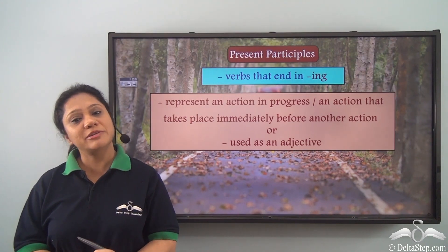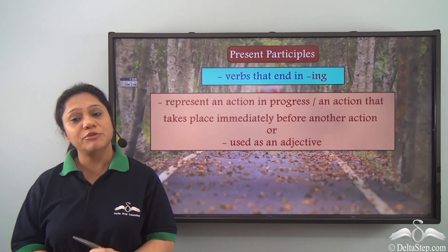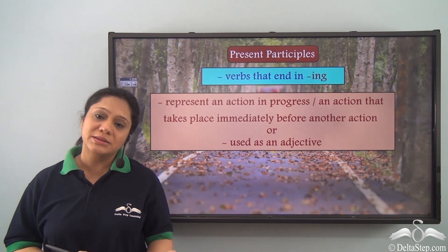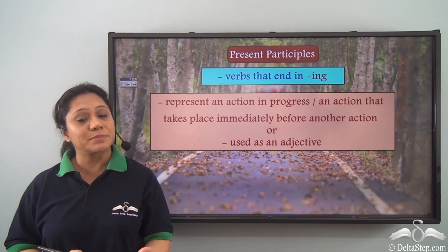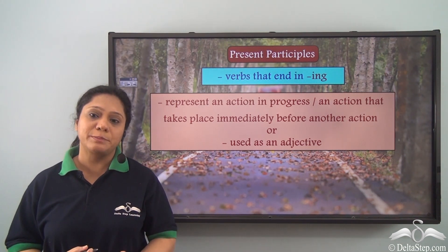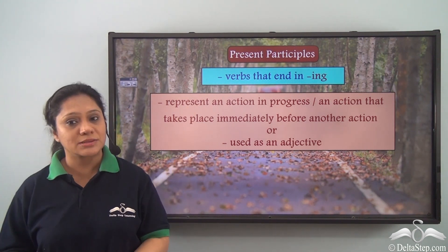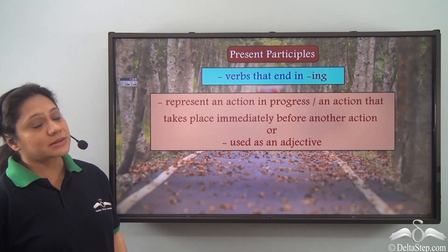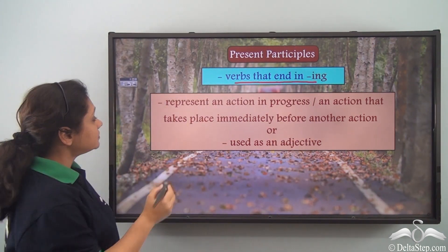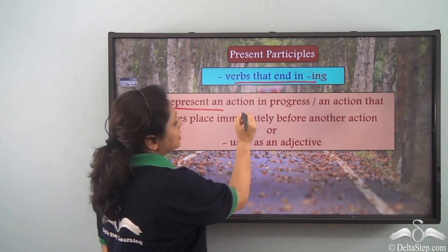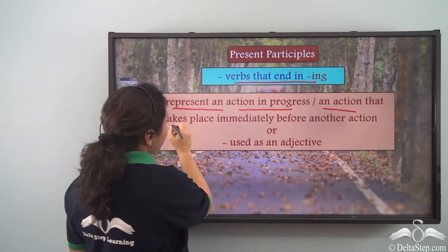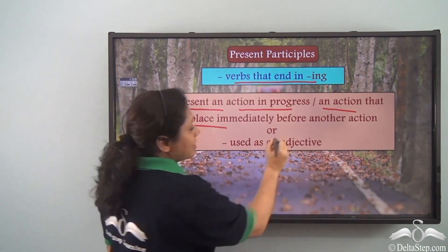We have learnt about the various kinds of participles. We know that participles are of three kinds: the past participle, the present participle, and the perfect participle. Now let us quickly recapitulate. Present participles are verbs that end in -ing; they represent an action in progress or an action that takes place immediately before another action.